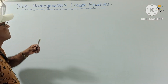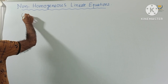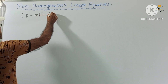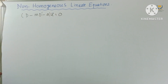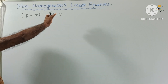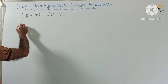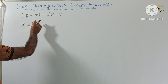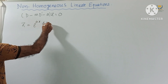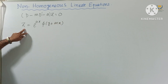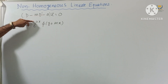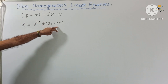Suppose we get this type of non-homogeneous linear equation in the form D(MD' - A)Z = 0. For solving this, it has a proof, but I'll skip the proof — just remember it as a formula. The solution will be Z = e^(AX) φ(Y + MX). We write A as the power of e and M inside the argument.